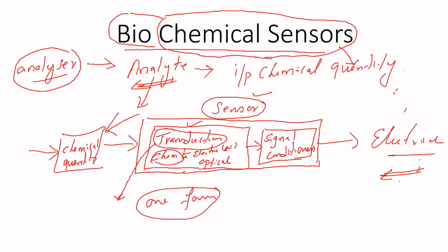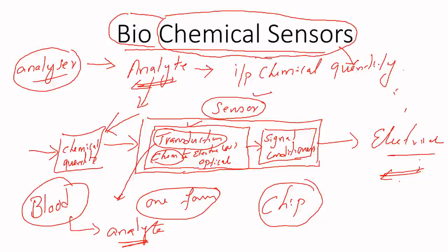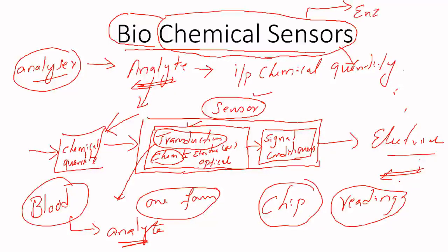A mixture of chemicals in our biomedical field — what are we talking about? Blood. Blood will be our analyte. We are talking about a technology, a chip, or a sensor which can understand and take a reading from blood directly — a biochemical sensor which can understand the composition of enzymes.